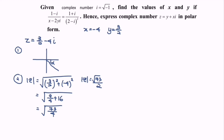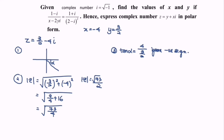Next we are going to find the basic angle, where we have tangent alpha is equal to y over x. The value of y is negative 4 — kindly ignore the negative sign — so we will have 4 over 3 over 2, which gives us 8 over 3 for tangent alpha. So alpha will be equal to 69.44 degrees as the basic angle.